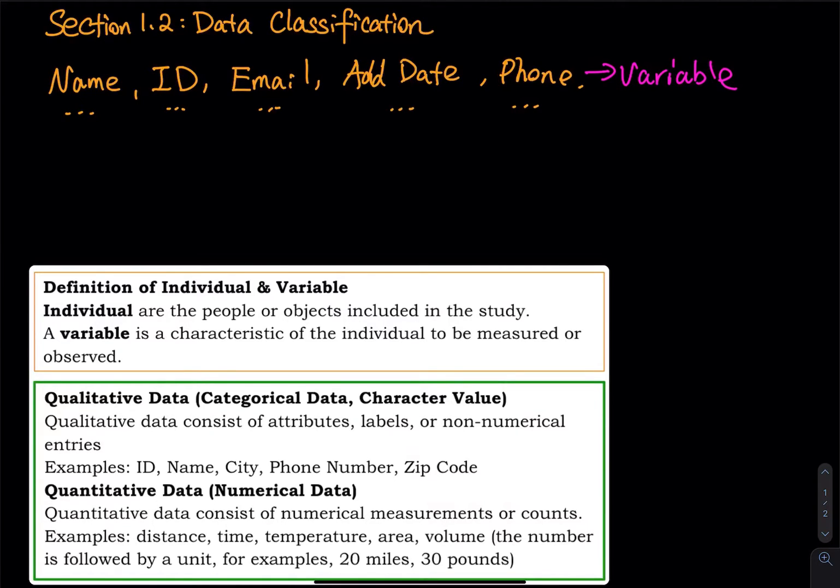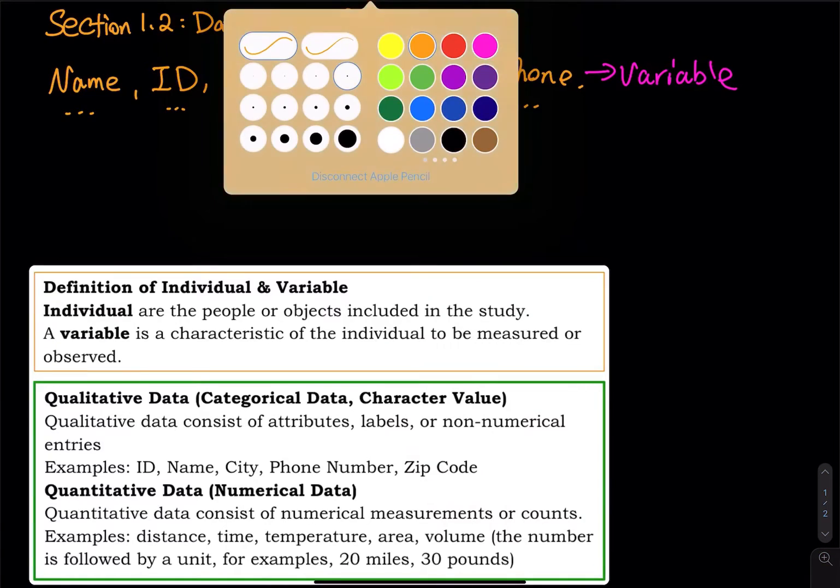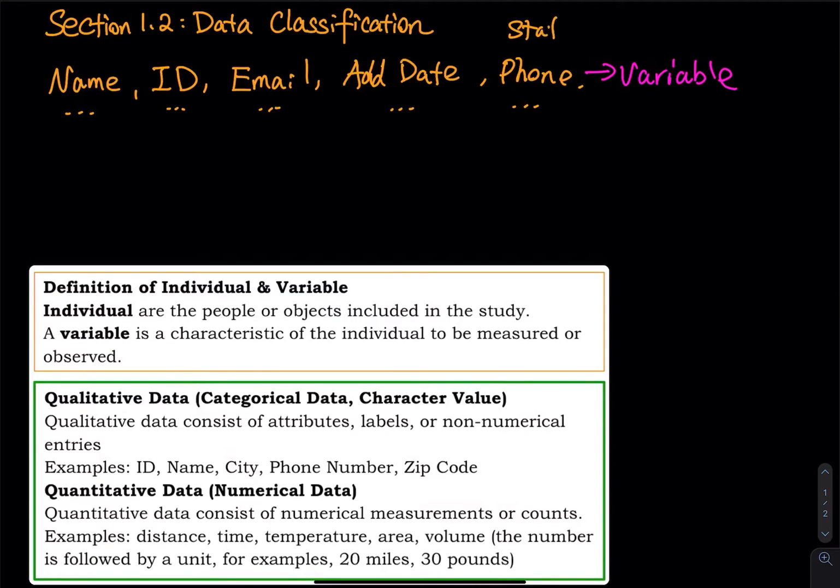And sometimes other than the email, you also see people's status - is that person enrolled or that person on the waitlist. And then what about individual? Every student is an individual. So usually the capacity of a class is 40 students, so that means I have 40 individuals in this roster.